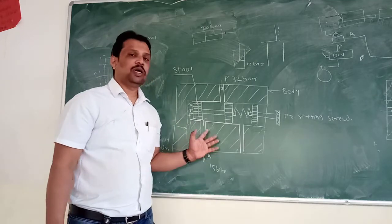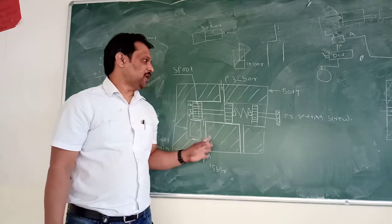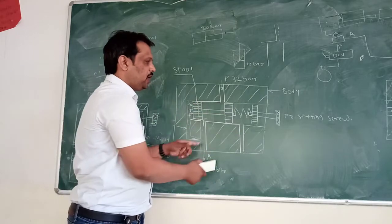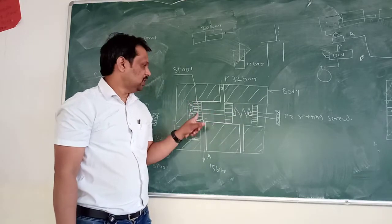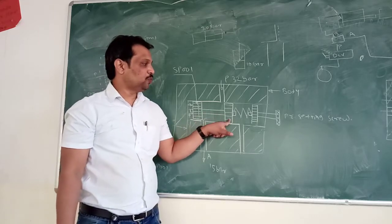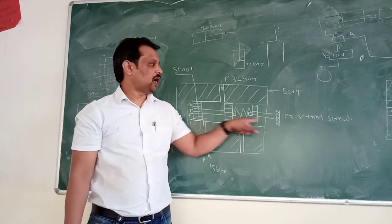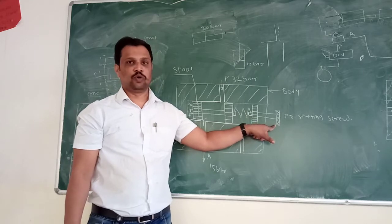In pressure reducing valve there is a valve body in which there is one finished bore. Inside this bore there are two spools. These two spools are mounted with spring adjuster and pressure setting screw.